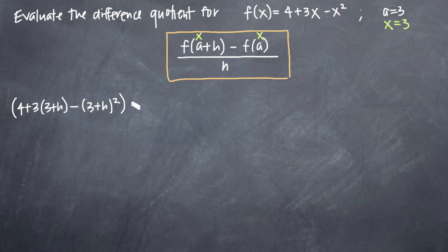Now, according to our formula, we'll subtract f(a) or f(x), which is just our original function. We don't have to make any modifications to it. We'll just be plugging in our original function: 4 + 3(3) - 3².